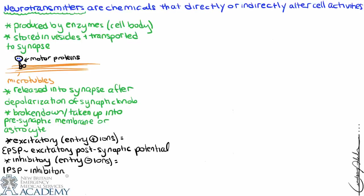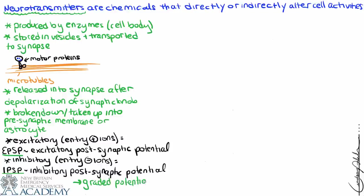These can actually be summative — we can have a combination of both excitatory and inhibitory signals, with entry of both positive and negative ions. If negative ions are entering and hyperpolarizing the cell, that just means we need that many more positive ions to overcome that hyperpolarization to reach the axon hillock and generate an action potential.